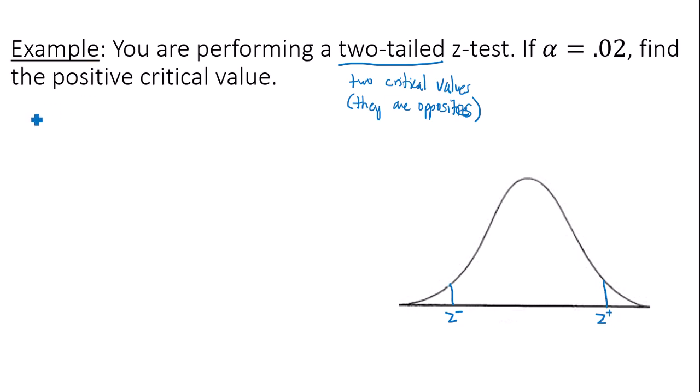Now, if you recall from a previous video, to find a critical value, you have to use alpha. Alpha is the area of the tails. My alpha is 0.02. Since I have two tails, I have to divide this 0.02 by 2 to get 0.01. So 0.01 in the left tail, 0.01 in the right tail.